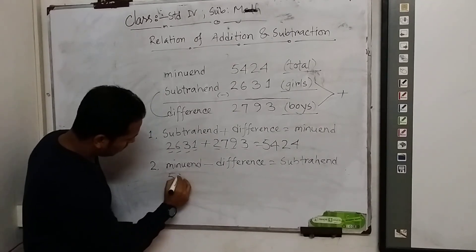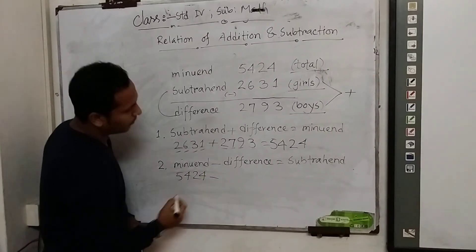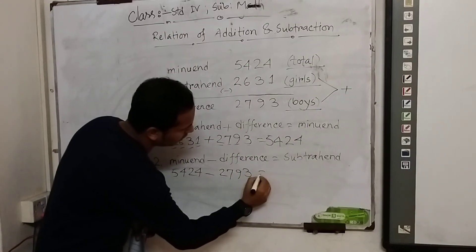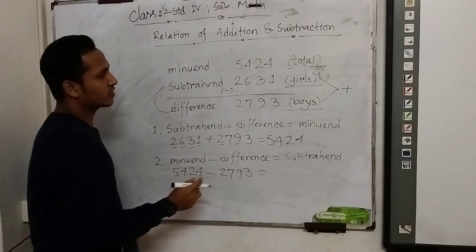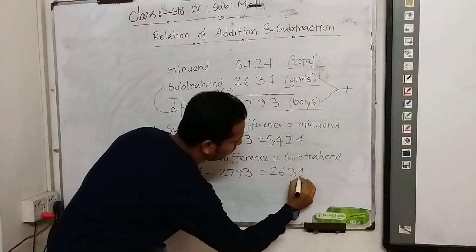So 5,424 minus 2,793 equals 2,631, which is the subtrahend.